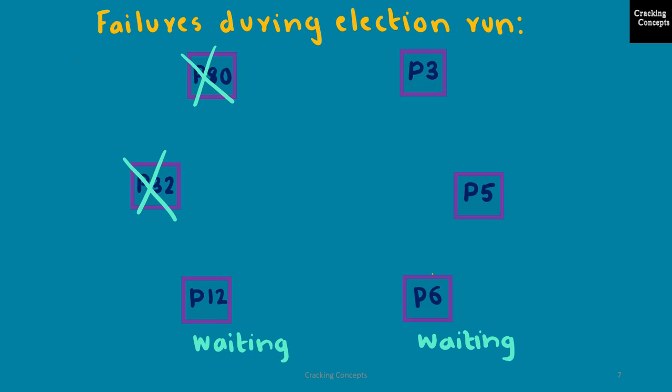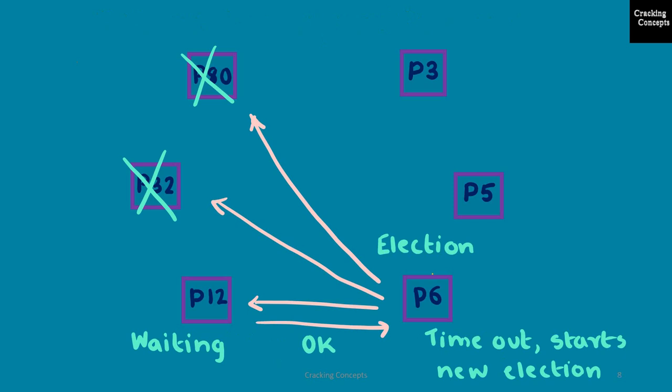Now let us look into a scenario where failures can occur during an election run. We have six processes arranged in clockwise order from the lowest to the highest numbered: 3, 5, 6, 12, 32, and 80. P80 and P32 are down, and P12 and P6 are in a waiting state — meaning they are waiting to get a coordinator message from the processes with higher IDs, which are P32 and P80. The problem is those two are down.